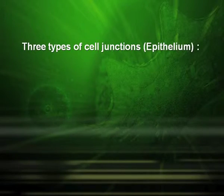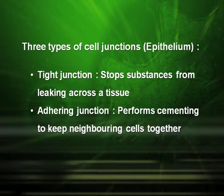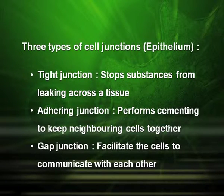Epithelial tissues have three types of cell junctions. The first is the tight junction, which stops substances from leaking across a tissue. The second is the adhering junction, which performs cementing to keep neighboring cells together. The third is the gap junction, which facilitates cells to communicate with each other.